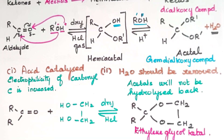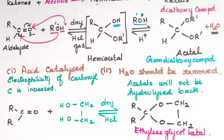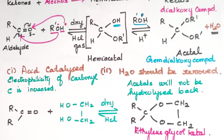To summarize: the intermediate products containing an OH group are the hemiacetals or hemiketals. The final products where the OH has been replaced are the acetals or ketals. If the structure has an OH group, it is a hemiacetal or hemiketal; if it does not, it is an acetal or ketal. I hope you understand. Thank you.